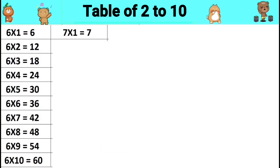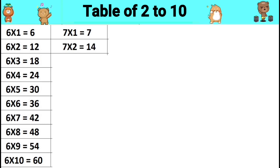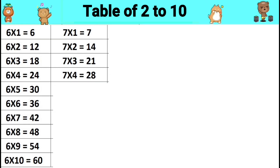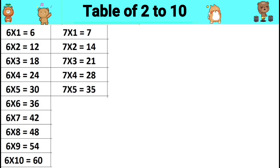Table of seven. Seven ones are seven. Seven twos are fourteen. Seven threes are twenty-one. Seven fours are twenty-eight. Seven fives are thirty-five.